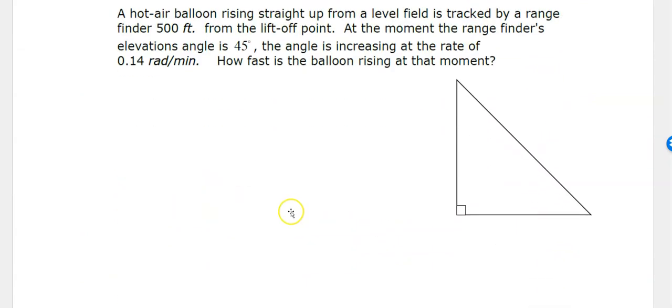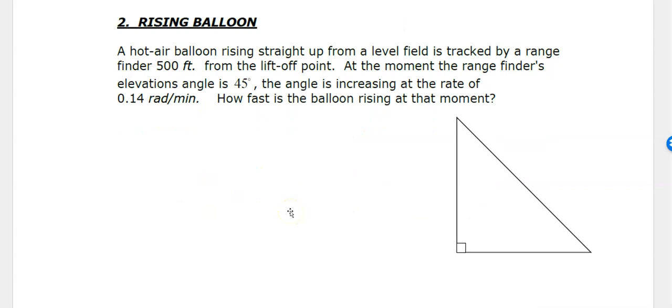Our next problem needs us to remember a little bit of trigonometry, so students tend to find these a little trickier. Take a moment and read the problem. A hot air balloon is rising straight up from a level field that is tracked by a range finder 500 feet from the liftoff point. At the moment the range finder's elevation angle is 45 degrees, the angle is increasing at a rate of 0.14 radians per minute. My math head is thinking degrees and rate, so I'm going to have to make a conversion. How fast is the balloon rising?